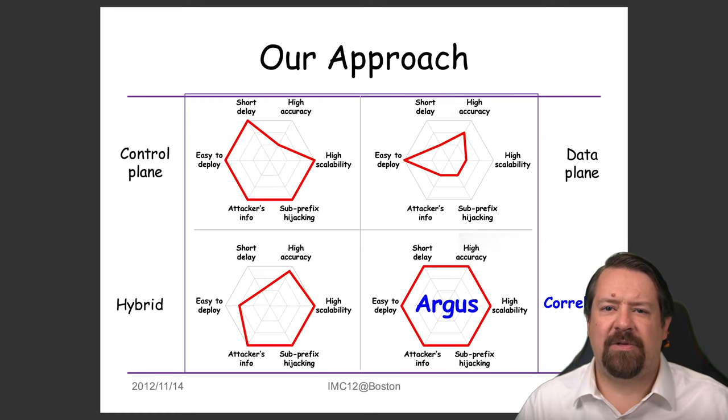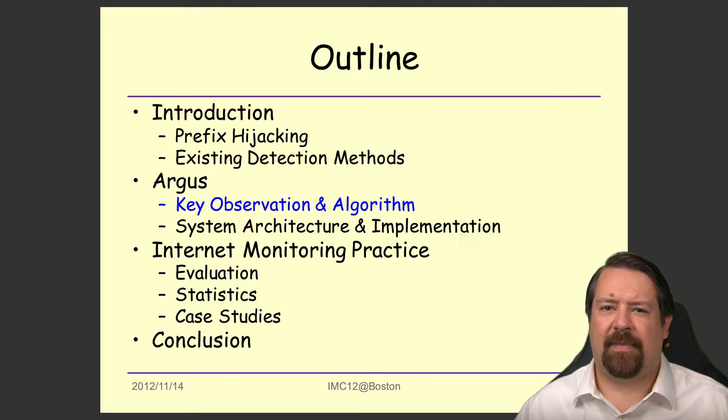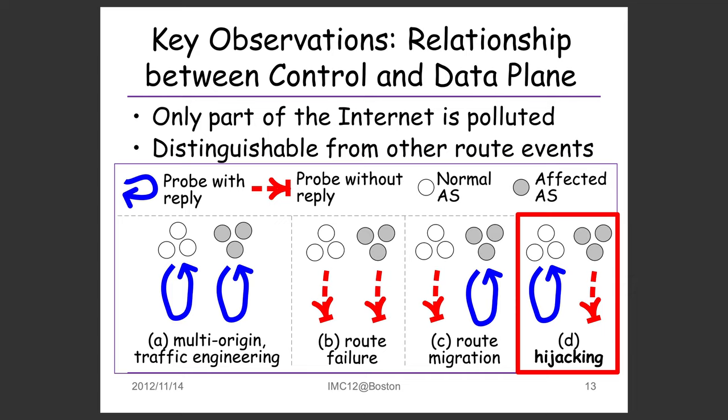The authors are proposing the system they call Argus, which correlates the data plane and the control plane, and in the minds of these authors has perfectly achieved all of their design goals. We know that there should be a relationship between the data plane and the control plane. When everything is working correctly, they operate in sync. So when we observe changes in the control plane, we can perform active probing in the data plane to confirm the events taking place.